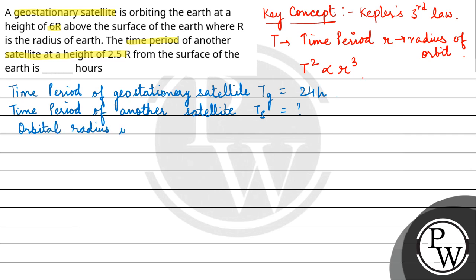The orbital radius of geostationary satellite, let's name it RG. What will RG be equal to? Radius of earth plus height of geostationary satellite from the surface of earth. The height HG is given in the question as 6R. The height of the geostationary satellite above the surface is 6R, so this is your total 7R.